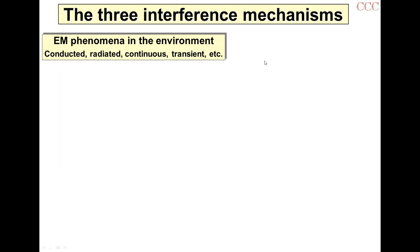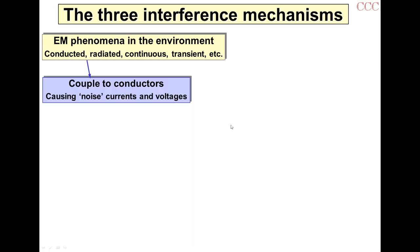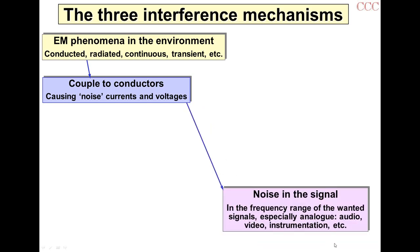The conductor — it might be a bond wire in an integrated circuit, but it's still a conductor — acts like an antenna and picks up noise currents and voltages. If these are in the frequency range of the wanted signal, it's especially a problem for audio, instrumentation, or video circuits, where you get noise actually in the signal. And you can't filter it out because it's in the same frequency range as the signal.